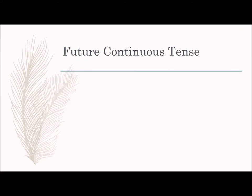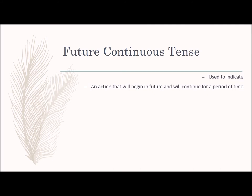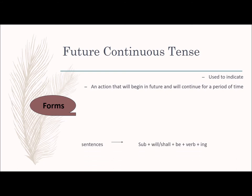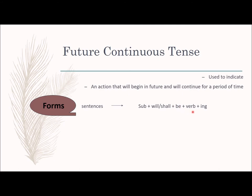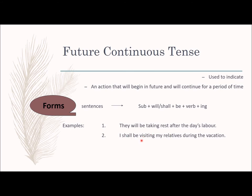Future continuous tense describes an action that will begin in the future and continue for a period of time. The form is: subject plus will or shall plus be plus verb plus -ing. Examples: 'They will be taking rest after the day's labor.' 'I shall be visiting my relatives during the vacation.' Exercise: 'Don't phone me tomorrow morning because I will be writing some important letters' — or 'I shall be writing some important letters.'